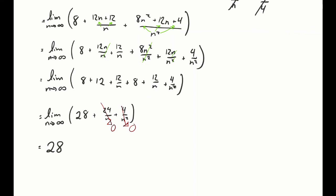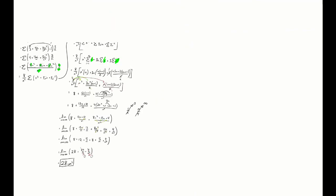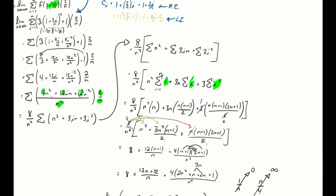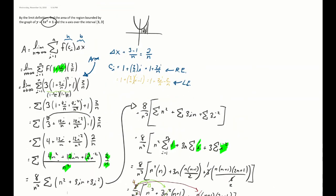That's not too much work overall. The area under the curve y equals 3x squared plus 1 from 1 to 3 is 28 square units — found by the limit definition.